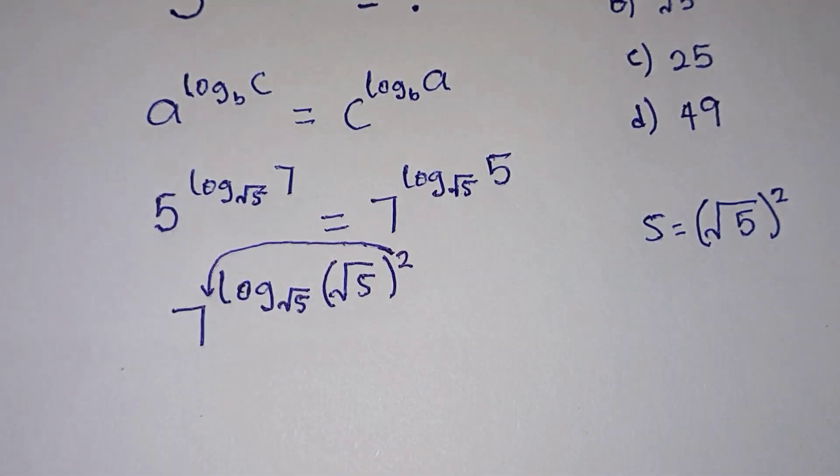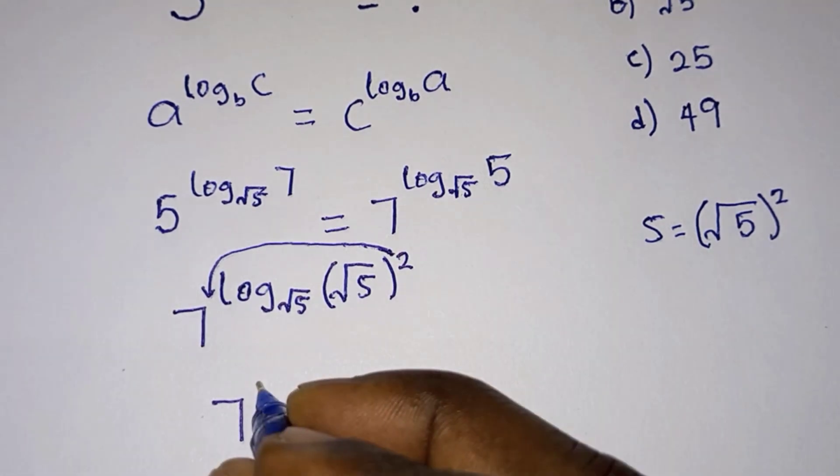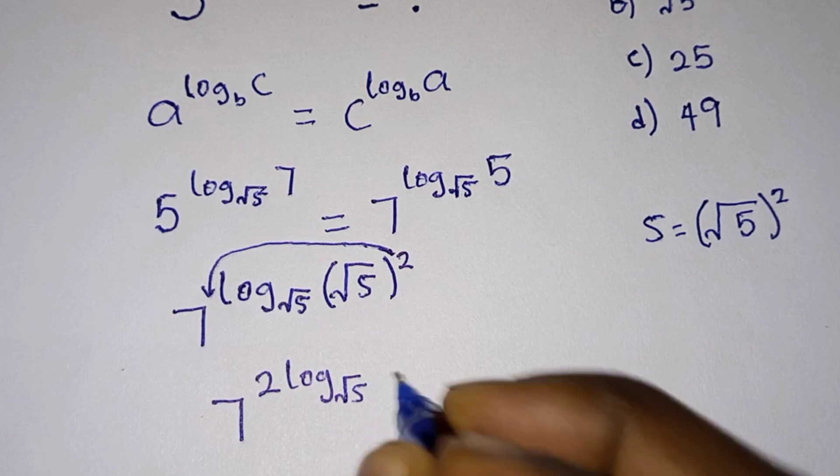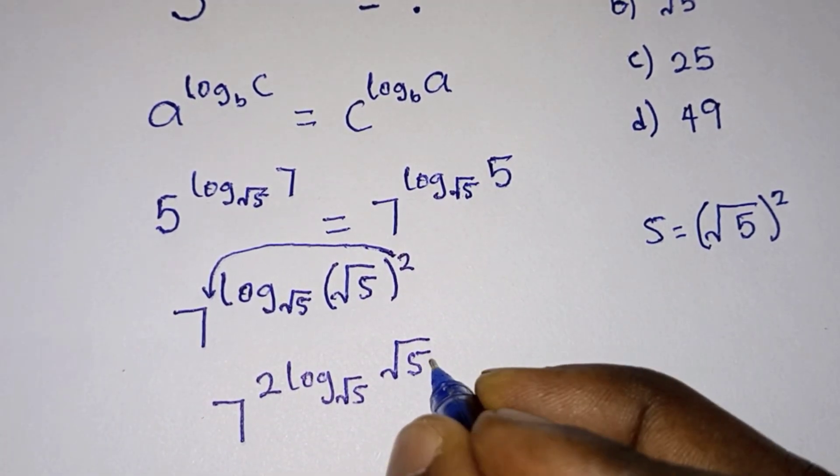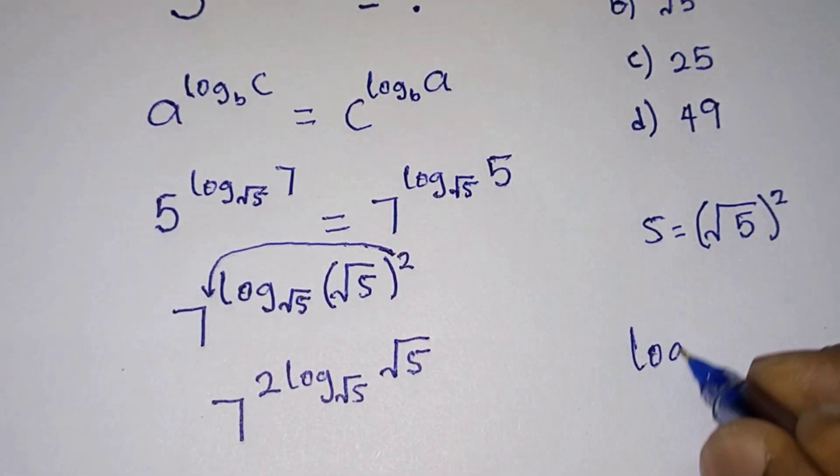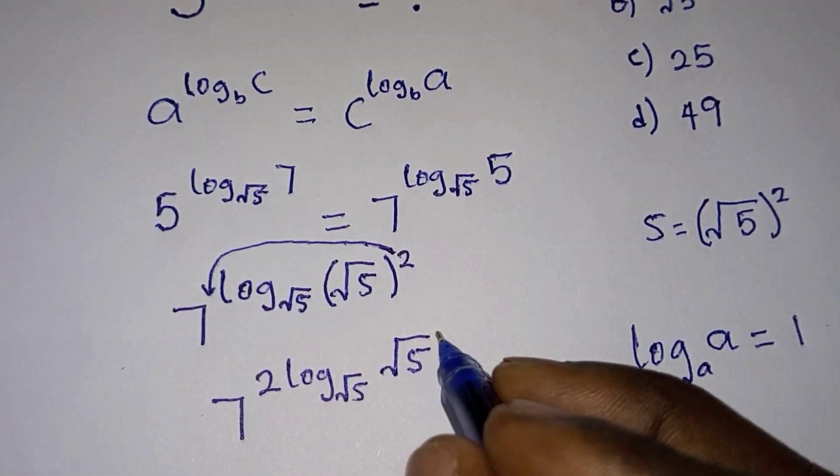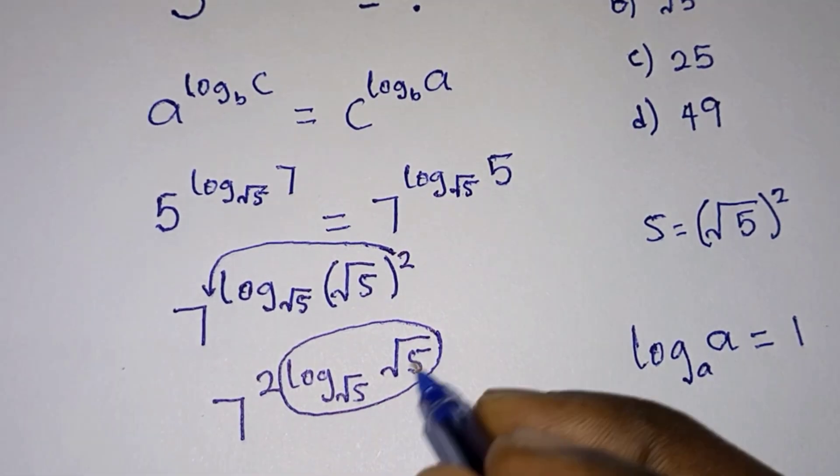So we're gonna have 7 to the power 2 log base root 5 of root 5. Now let's remember that if you have log base a of a, this is nothing but one. So the whole of this is one - the base and the number are the same.